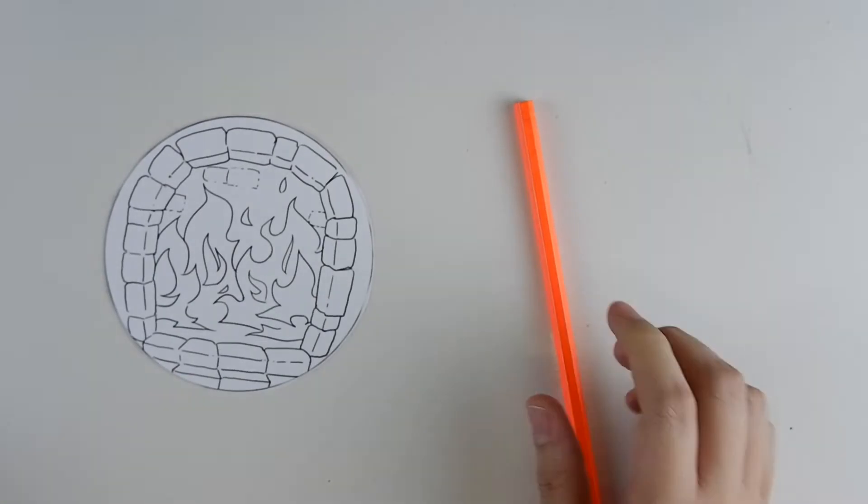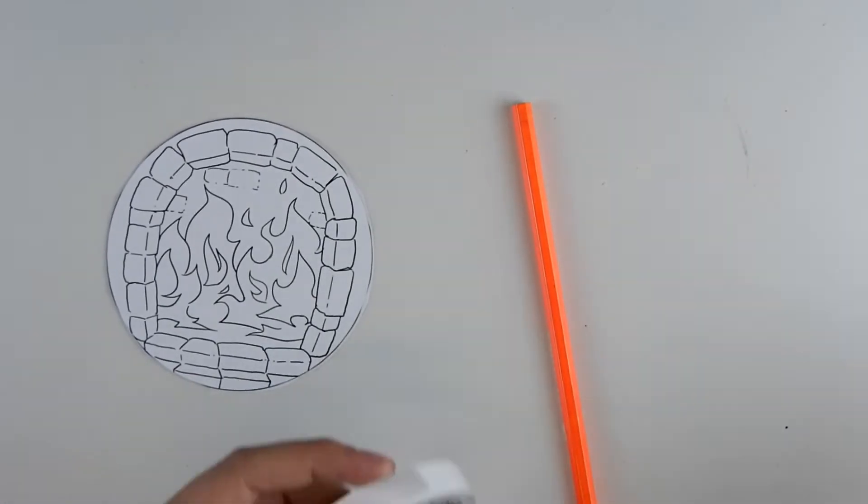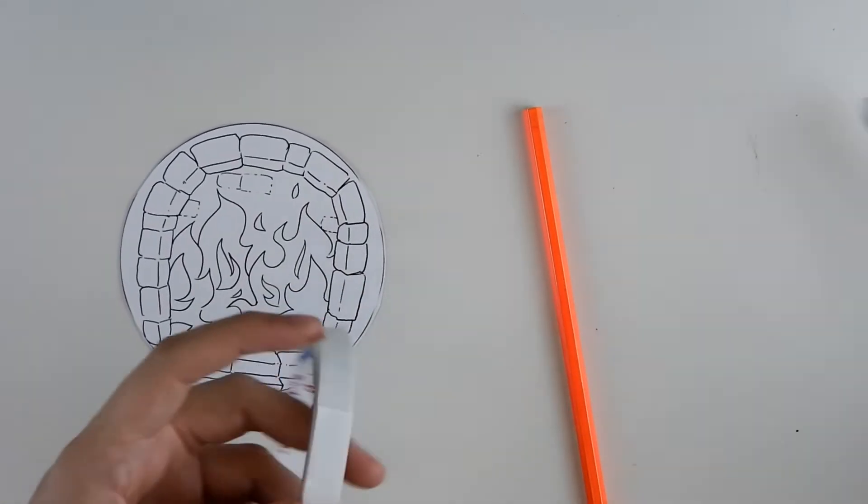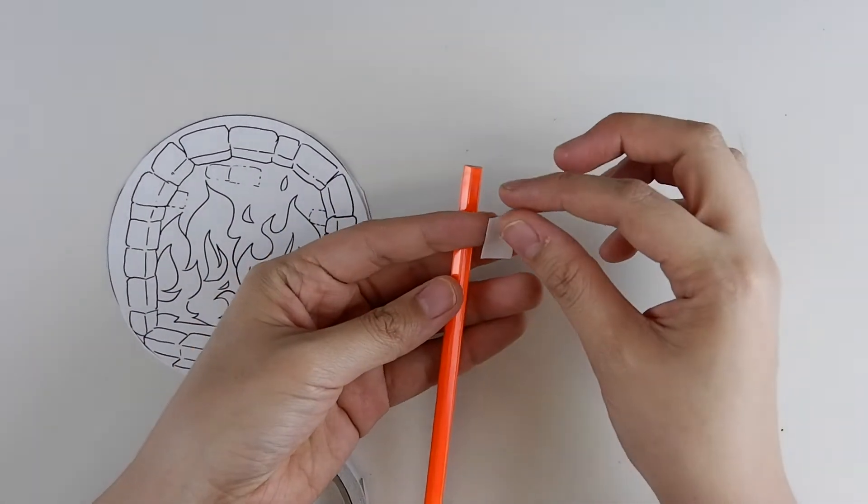Next, take one pencil and stick an inch of double-sided tape to the end. Make sure to cover the whole circumference.